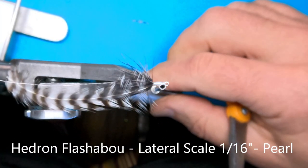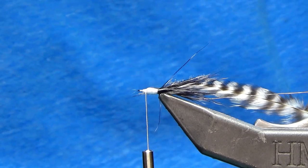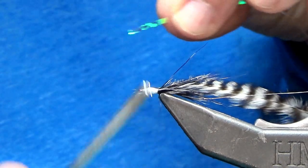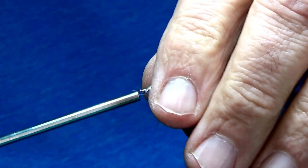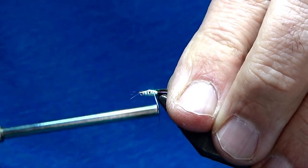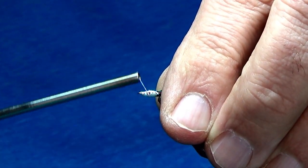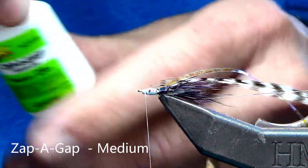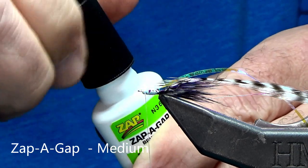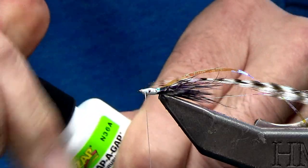Next thing I'm going to do is use my Hedron lateral scale. This is the salt water size, so if you're looking, there are two different sizes. Salt water is obviously the larger of them. And I'm going to tie it in. And I see I've got a couple materials sticking out front. I'm just going to hit them real quick with a lighter, get them out of the way. Now the eye is nice and clear.